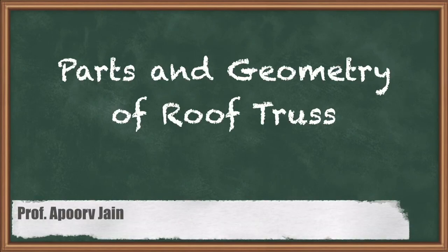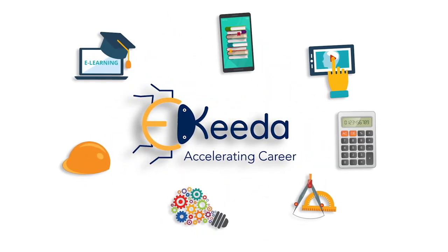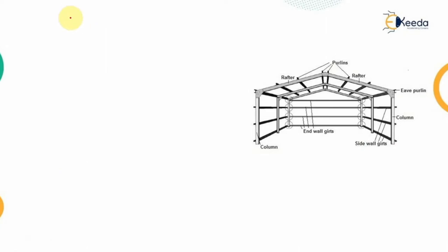Hello everyone. In this video we are going to study about the parts and geometry of the roof trusses. Roof trusses are primarily designed for industrial buildings, which are examples of low-rise buildings made up of steel structures. These buildings have no interior floors because the interior space required is very large. There are no partition walls, and if any floor is provided, it will be of very large span.